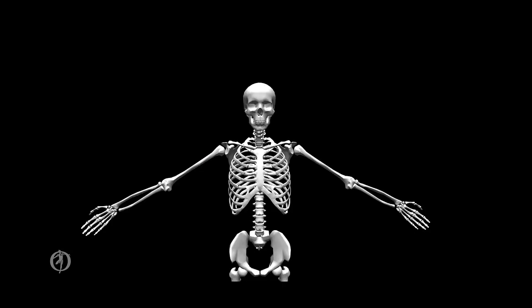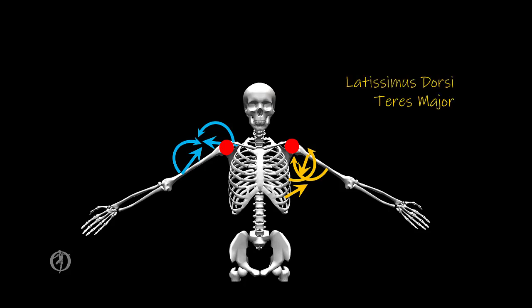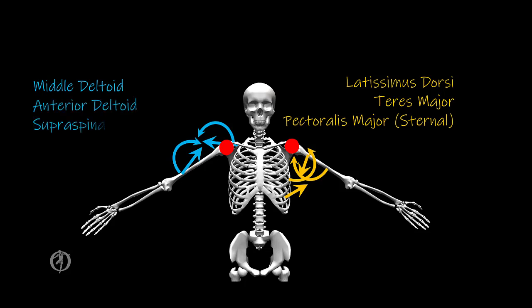In the frontal plane, the glenohumeral joint has an anterior-posterior axis that goes through the humeral head. Any MTCs that have a force vector that is medial to this axis of rotation will create a torque that will adduct the glenohumeral joint, while any MTCs that have a force vector that is lateral to this axis of rotation will create a torque that will abduct the glenohumeral joint. MTCs that will adduct the glenohumeral joint include the latissimus dorsi, the teres major, and the external portion of the pectoralis major, while those that will abduct the glenohumeral joint include the middle deltoid, the anterior deltoid, and the supraspinatus.